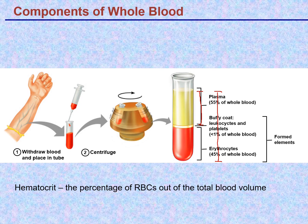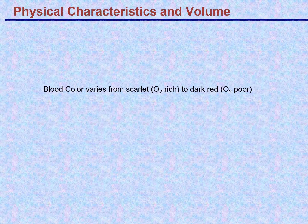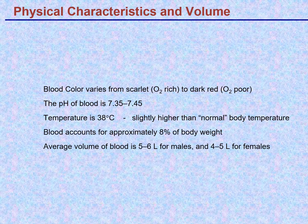There's a range of normal values — very few things have a single number associated with them. Males typically have a slightly higher hematocrit than females. Blood is bright red if it's fully saturated with oxygen, and if oxygen saturation drops below 99.9 percent it starts to get a darker red color.